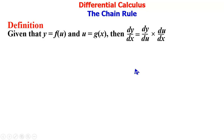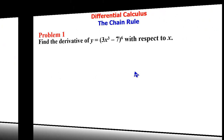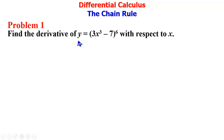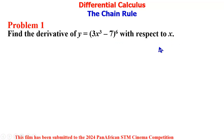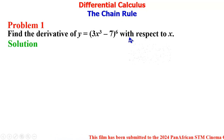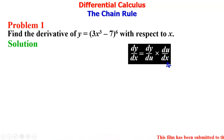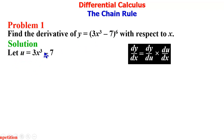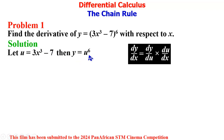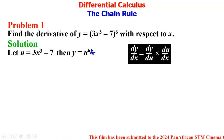We start with Problem 1: find the derivative of y = (3x³ - 7)⁶ with respect to x. In the solution to this problem, we apply chain rule and introduce u. We let u be what is inside the brackets, so we let u = 3x³ - 7, and then our y will be u raised to the power 6.